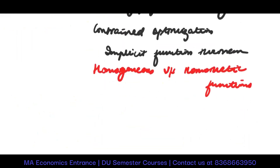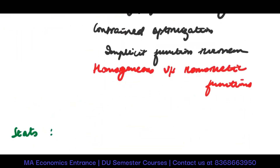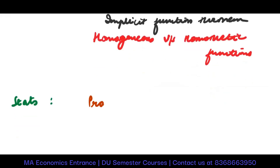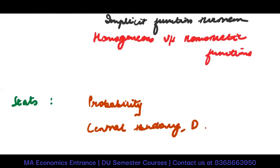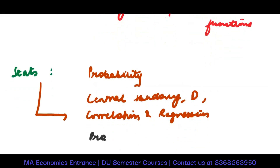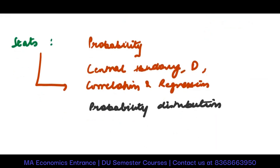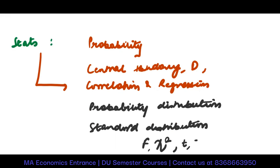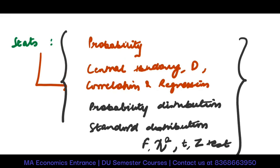Now let's talk about stats. You should be doing probability. Then, with lower chances of coming but still relevant: measures of central tendency and dispersion. Importantly, correlation and regression — there are high chances these will come. Then probability distributions, where you learn about different kinds of distributions including normal and binomial. You should also understand statistical tests: F-test, chi-square, t-test, and z-test.